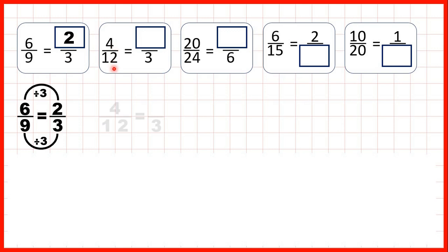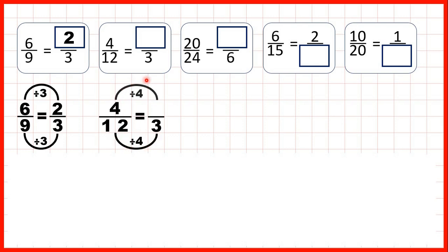Now, 4 twelfths is equivalent to how many thirds? Again, we need to use division. 12 divided by 4 is 3, because 3 times 4 is 12. And again, what we do to the denominator, we need to do to the numerator as well. 4 divided by 4 is 1. So 4 twelfths is equivalent to one third.